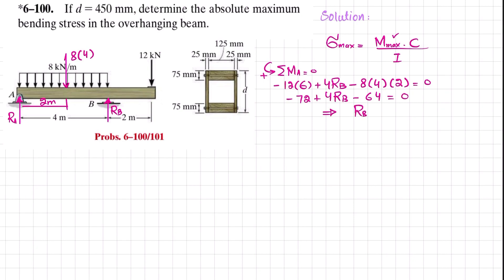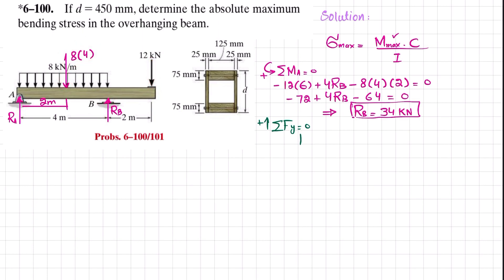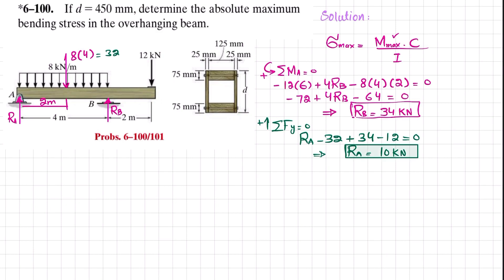From this equation, R_B equals 34 kilonewtons. Now using the second equilibrium condition — sum of all forces along the Y direction equals zero, with upward forces positive — we have R_A plus R_B minus 12 minus 32 equals zero. Substituting R_B equals 34: R_A minus 32 plus 34 minus 12 equals zero, giving R_A equals 10 kilonewtons.